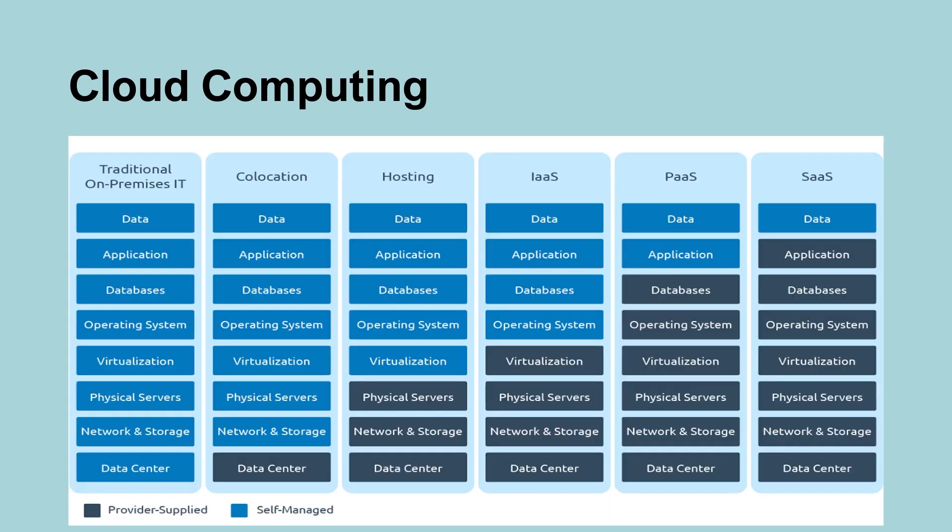If we look at this evolution of cloud computing, in the traditional on-premises IT world, the organization has to maintain everything — the data center, network, physical servers, virtualization, operating system, databases, application and data. Moving to a hosting model, you would maintain virtualization, operating system, database, application and data, while physical servers, network storage and the data center were managed by hosting providers.